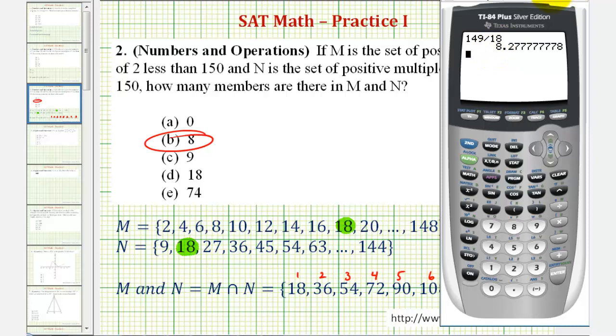The other option would be to use the table feature of the calculator. If we press Y equals, and then because we're looking for multiples of 18 that are positive and less than 150, we'll enter 18x. And now we can use a table feature to identify the multiples of 18. But before we do this, let's check our table setting. We'll press second window and make sure that the independent feature is on automatic. If it's not, we just highlight it and press enter.